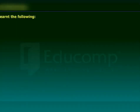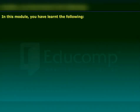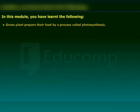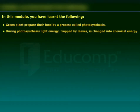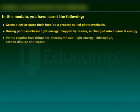In this module, you have learnt the following: Green plants prepare their food by a process called photosynthesis. During photosynthesis, light energy trapped by leaves is changed into chemical energy. Plants require four things for photosynthesis: light energy, chlorophyll, carbon dioxide, and water.